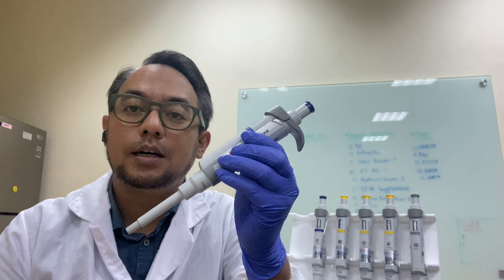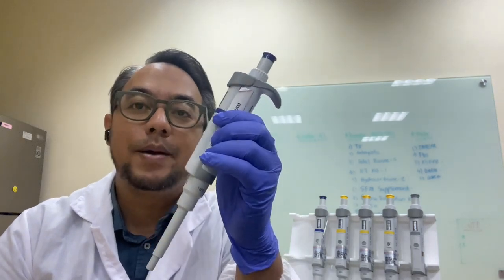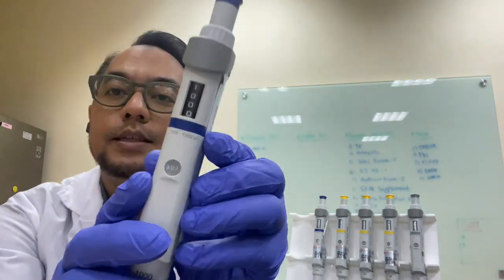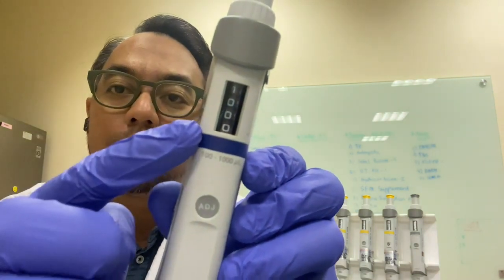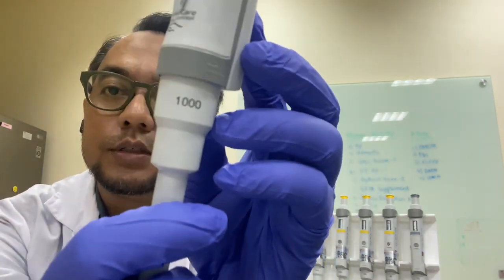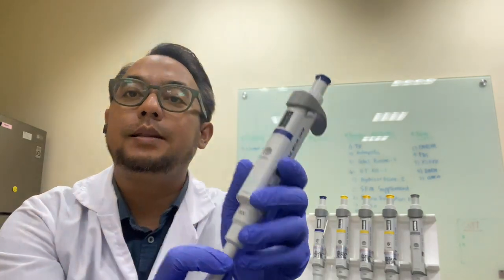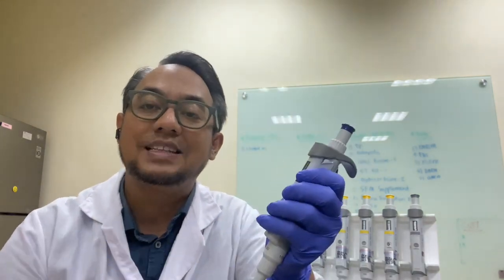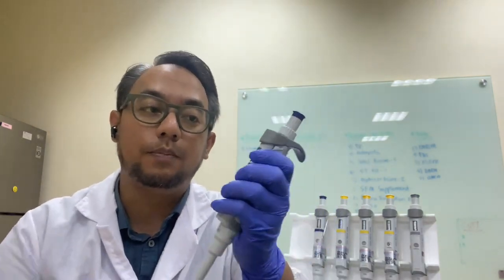So, this is the typical micropipette. Here, you can see there is 1,000 number and you can also see here 1,000. So, it means it has 1,000 volume of the pipette.